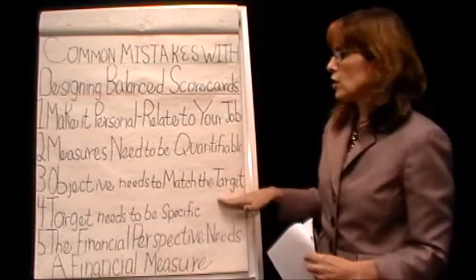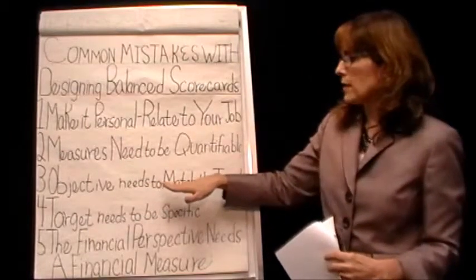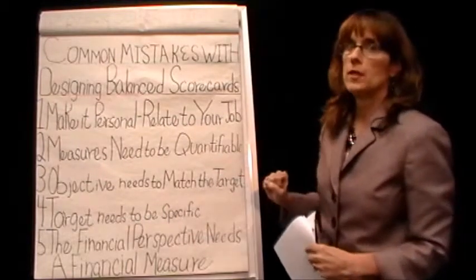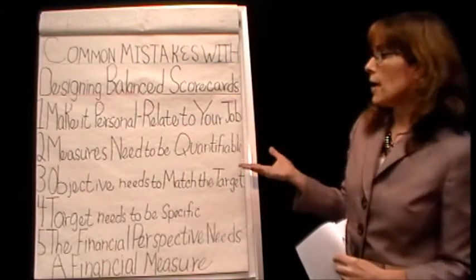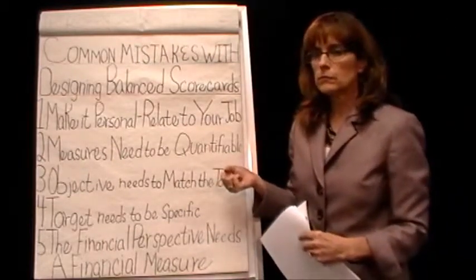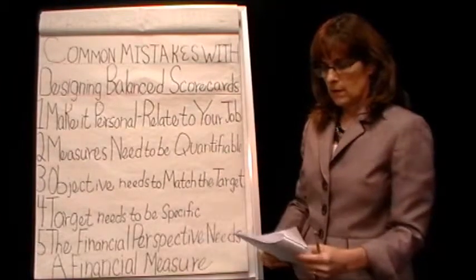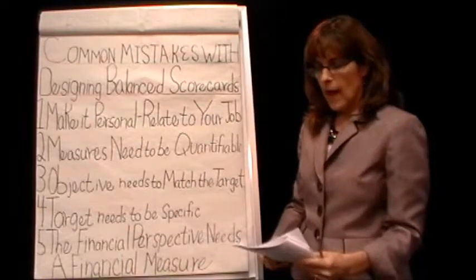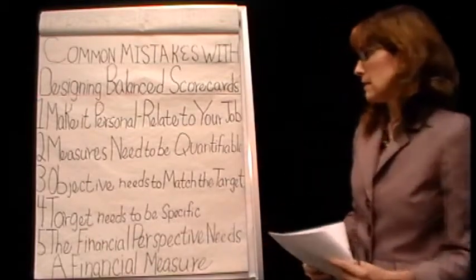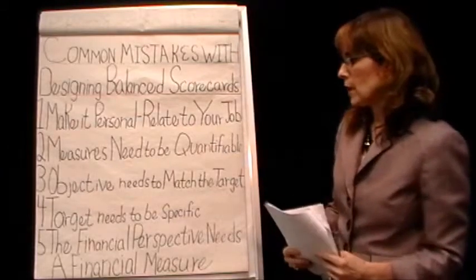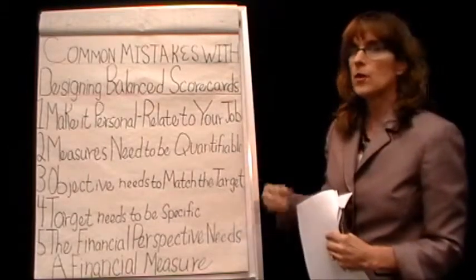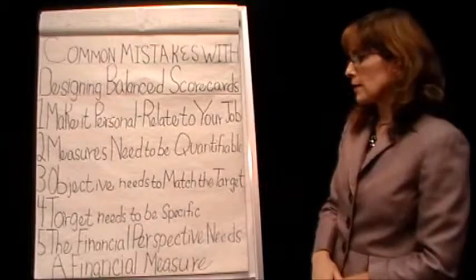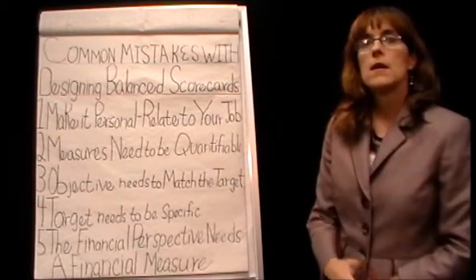The objectives need to match the target — whatever your goal is, it better match whatever you're trying to measure. The target is nothing more than quantifying whatever you've put down for your measure. For Jane Doe, her measure was a completion date, and her target was a very specific date. Everything needs to be interrelated. Don't just say you're going to reduce costs — you have to put a percentage or a dollar amount. How are you going to know when you've reached that target if it's not specific?